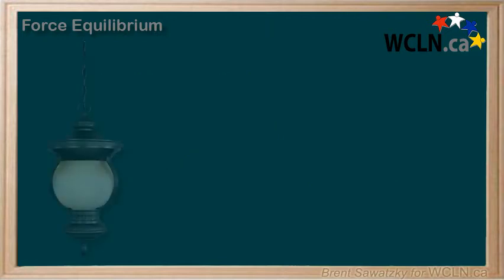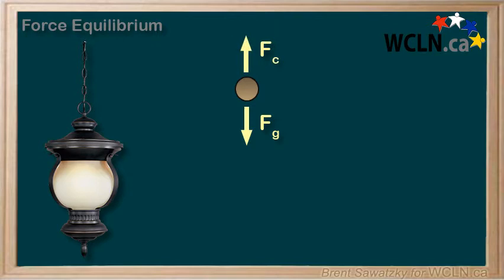For example, a hanging lamp represents a common 1D equilibrium problem. This lamp is hanging by a single chain. So to start the problem, let's draw a good free body diagram of the lamp. The weight of the lamp, pulling it down, or Fg, and the force from the chain is holding it up. Let's call that Fc.